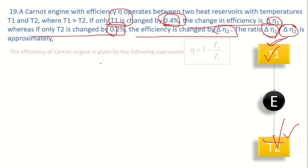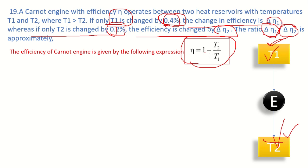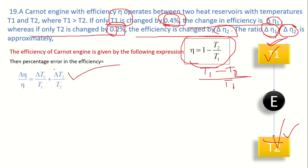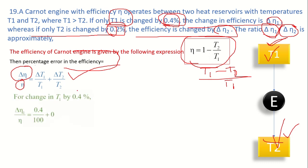The efficiency of a Carnot engine is: η = 1 − (T2/T1), which can also be written as (T1 − T2)/T1. The percentage error in efficiency is given by: Δη/η = ΔT1/T1 + ΔT2/T2.